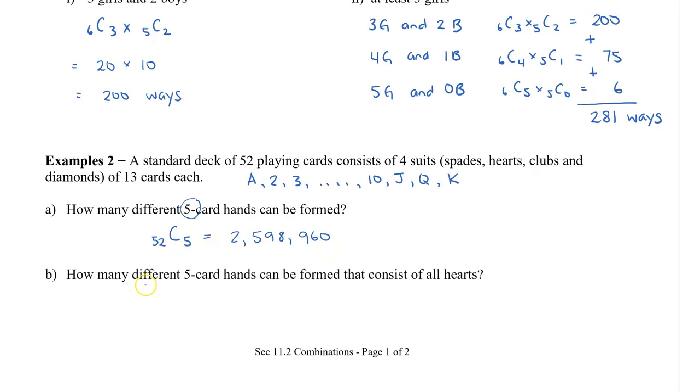Now the second question here is how many different 5 card hands can be formed that consist of all hearts? So this time you only want hearts. So there are 13 cards of each suit. So we're going to say that there are 13 cards, 13 hearts, and we want to choose 5 of them. So this time we get 1,287 5 card hands that are only consisted of hearts. Now that you know how combinations of playing cards work, you can now try some other card hands and poker hands as well.